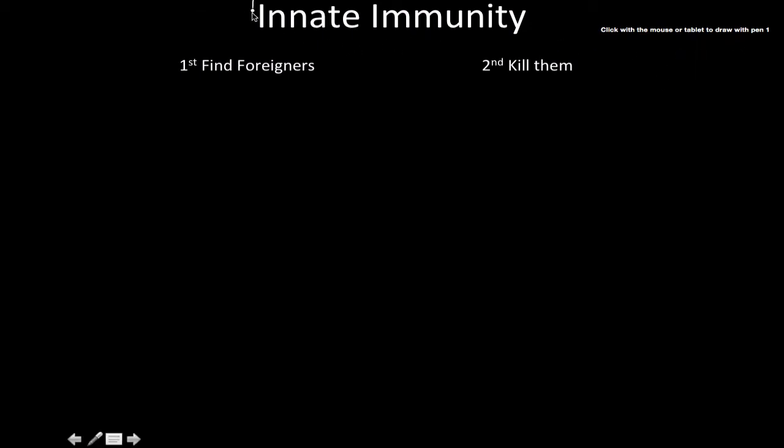Now let's dive into the innate immunity. The innate immunity, just like the adaptive immunity, does two things in a specific order. The first thing it needs to do to protect you from pathogens, or really not just pathogens but toxins as well, is to first find the foreigners.